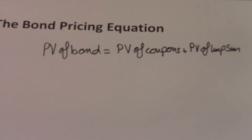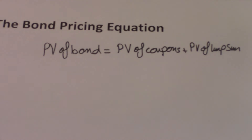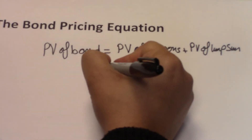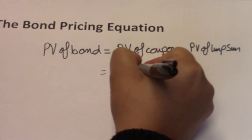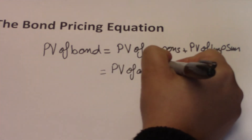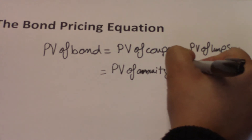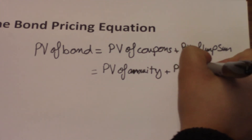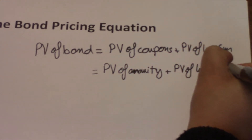The coupons are regular payments that are made every period over a specific period of time. To determine the present value of the coupons, we use the annuity formula. So the present value of coupons is simply the present value of the annuity, plus the present value of the lump sum.